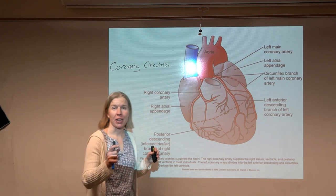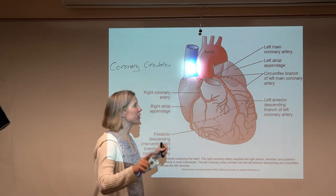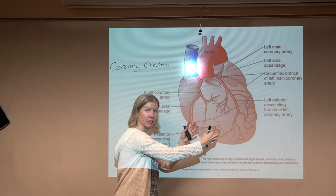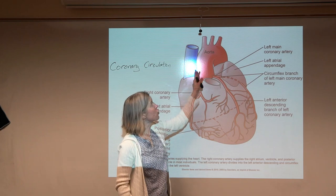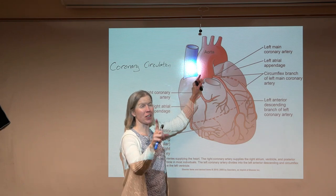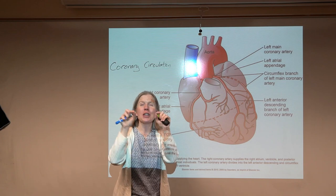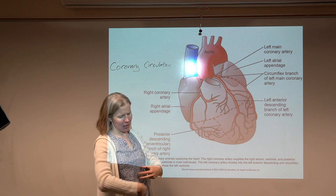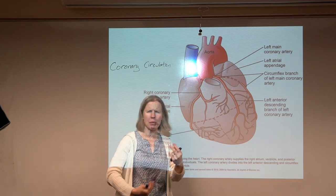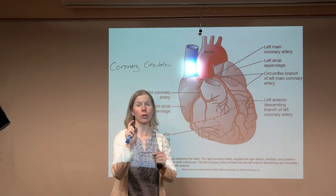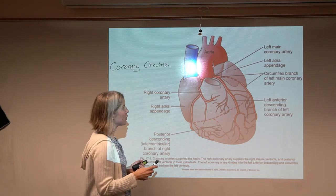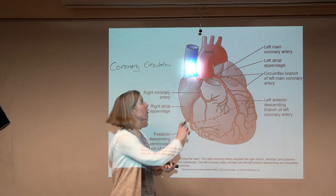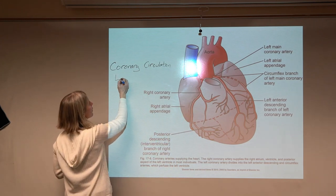The heart takes care of itself. Here's the aorta: all that oxygenated blood in the left ventricle — when the left ventricle contracts and shoots blood out of the aorta, right at the base of the aorta is where the coronary arteries come off. We're serious about getting oxygen to this organ right away. You have two branches: the left coronary artery and the right coronary artery.